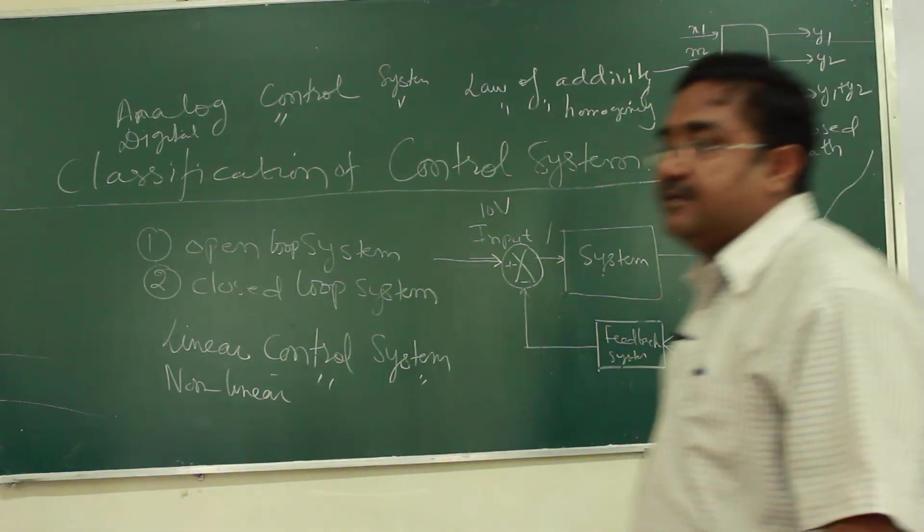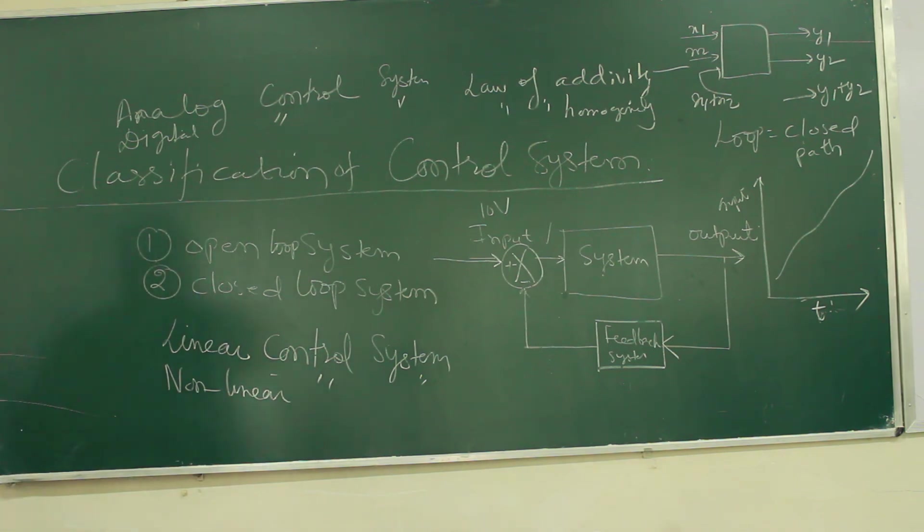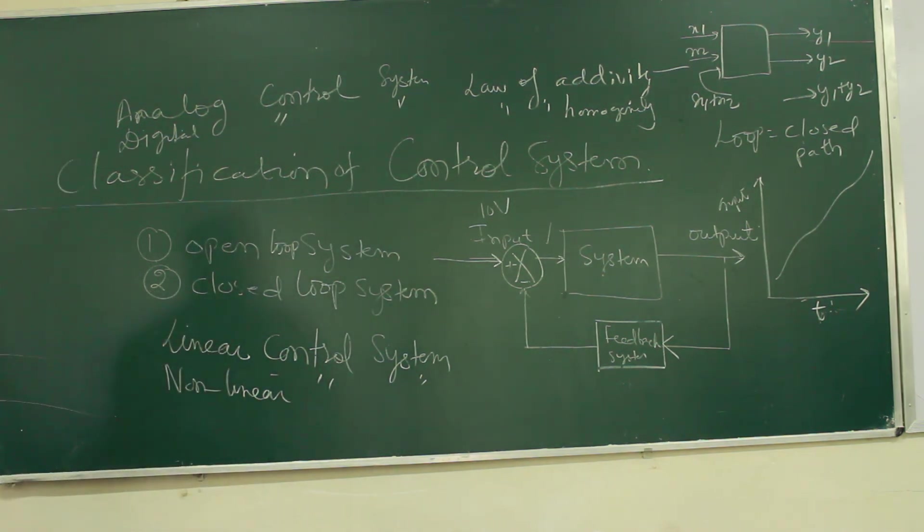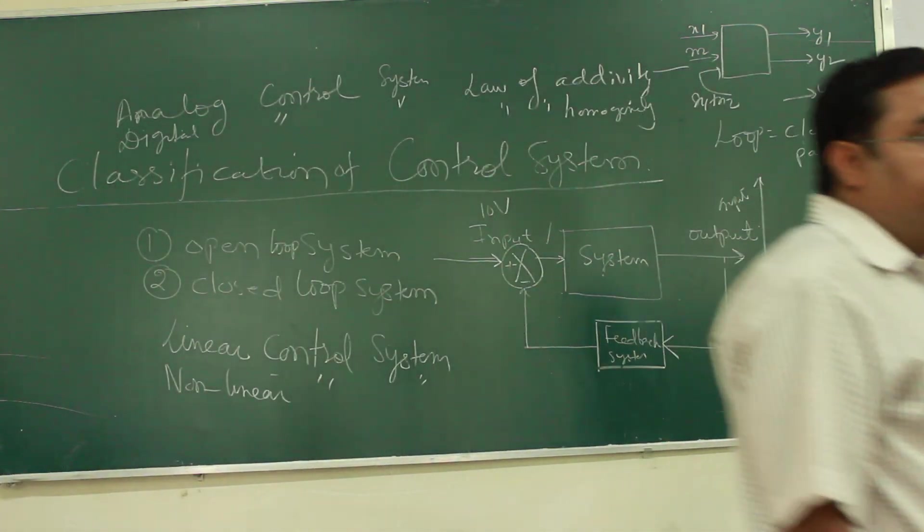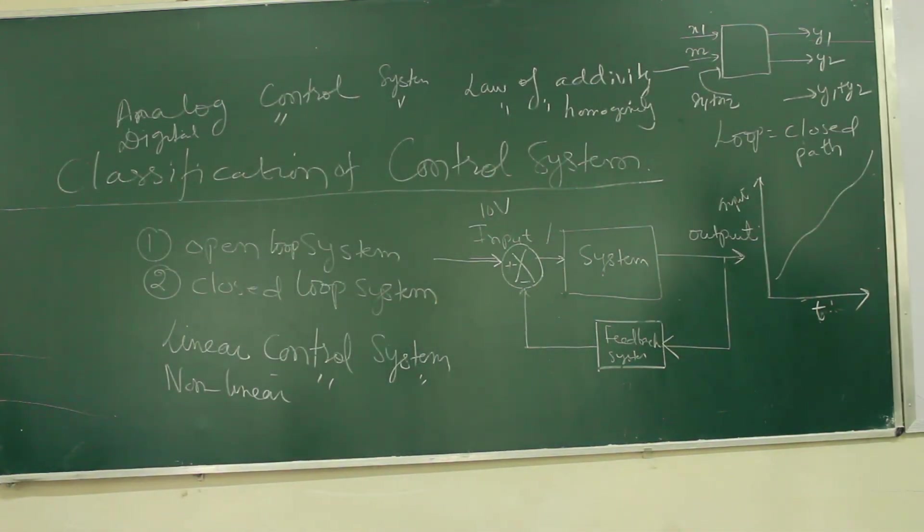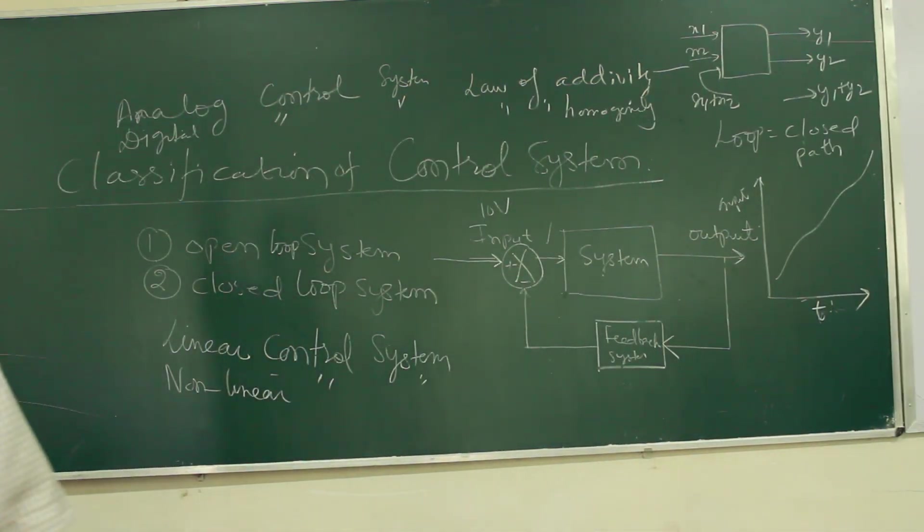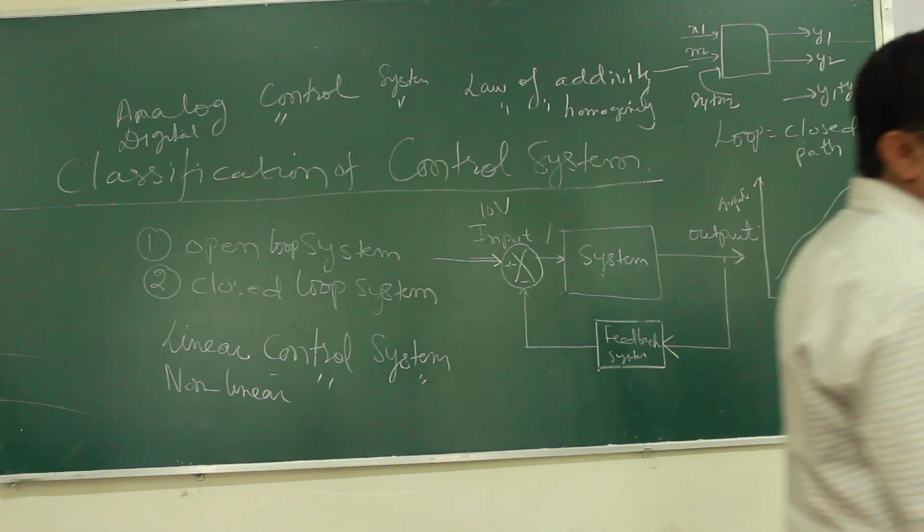Human body is a natural control system. Animal body is a natural control system. Now, if certain thing is being created by you, by man, it will be called an artificial or man-made control system. These all rocket launching by the ISRO and all this, these are man-made control systems. For every instant, there is data monitoring that is being sent from the satellite to the ISRO center, and accordingly they take decisions automatically. This is the control system.